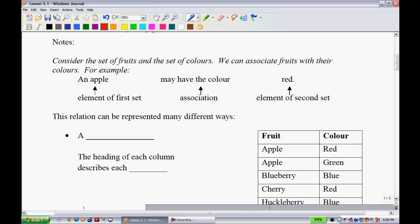Like I said, we're going to dive into some different ways that we can represent relations. Consider the set of fruits and the set of colors that we have here. We can associate fruits with their colors. For example, we have an apple. That's an element that we say in the first set. And then on the other side here, we have red. That is an element of the second set. The association, or you could call this the relation, is that an apple may have the color red.